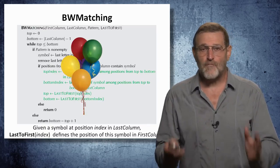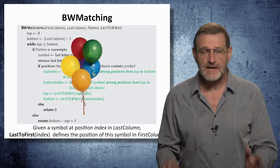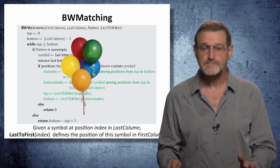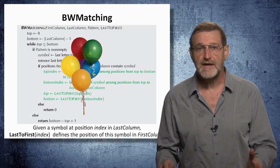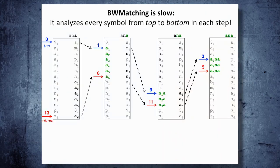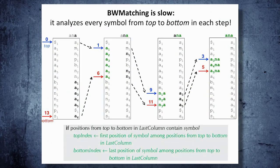It looks like now, finally, we are done. We have a very fast pattern matching algorithm based on Burrows-Wheeler transform. And it has good memory footprint. The only problem, though, is that BW matching is very slow. It analyzes every symbol from top to bottom in the last column in each step. What should we do?